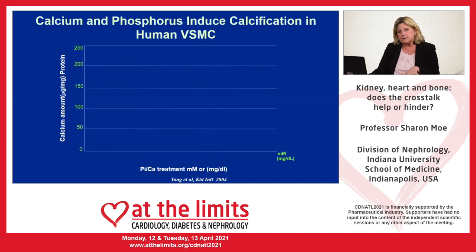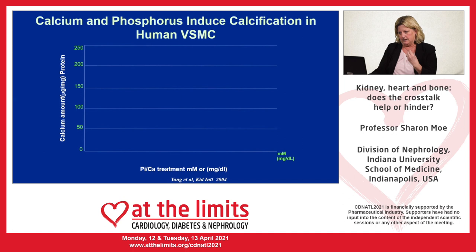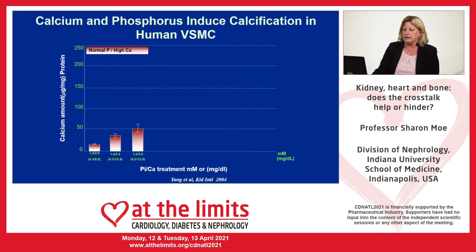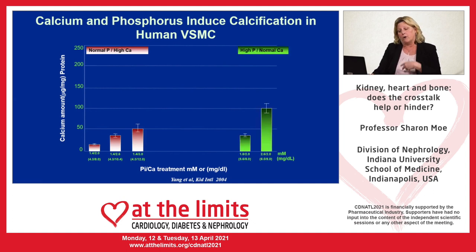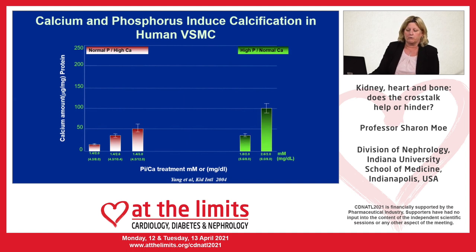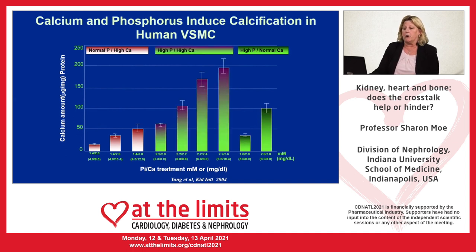If you take a vascular smooth muscle cell and put it in a petri dish, it will become a de-differentiated vascular smooth muscle cell. If you add normal phosphorus and high calcium to the medium, you get mineralization. If you add high phosphorus and normal calcium, you also get mineralization. And if you add both high phosphorus and high calcium, you get even more mineralization.